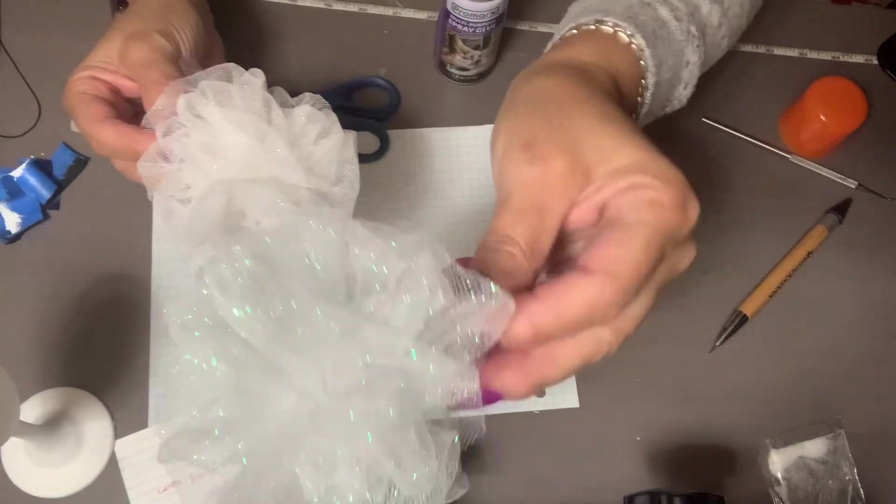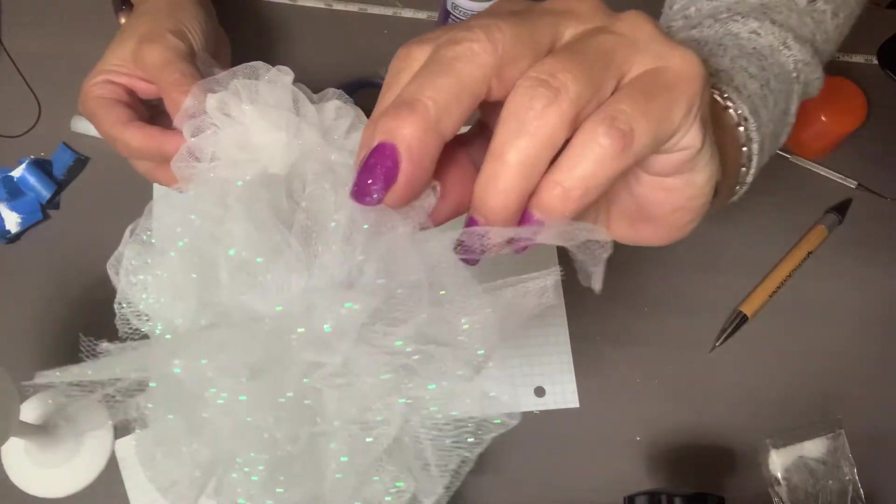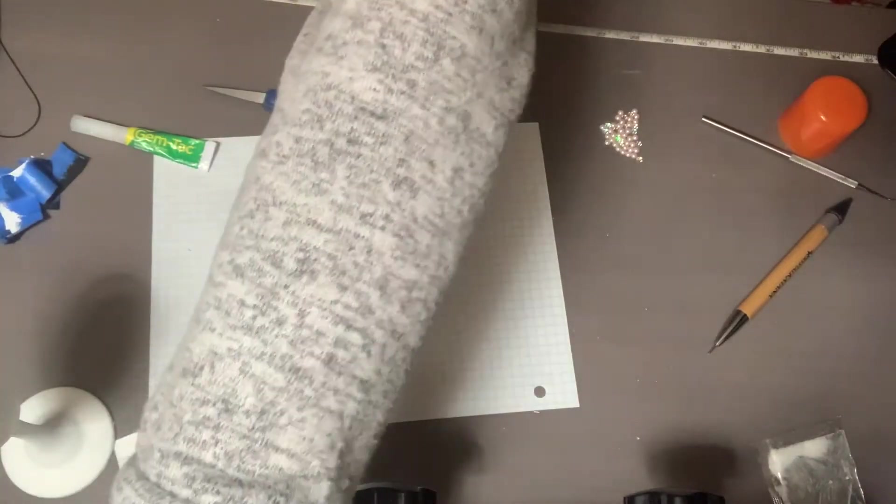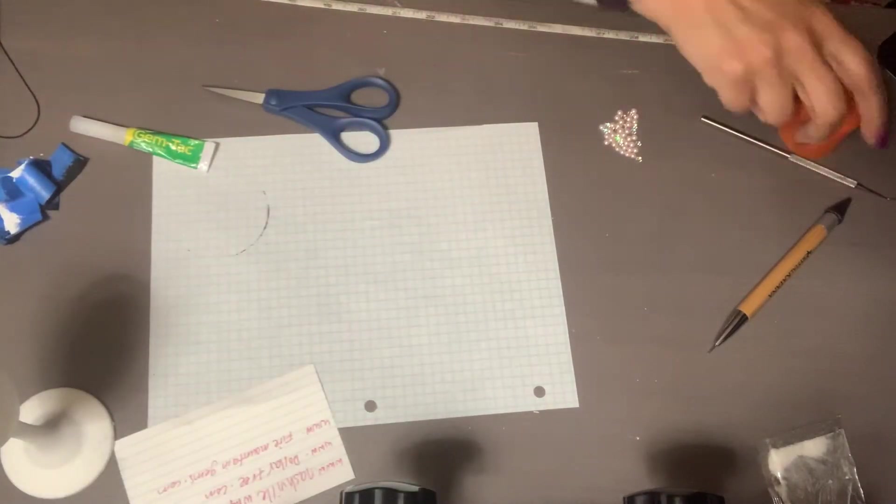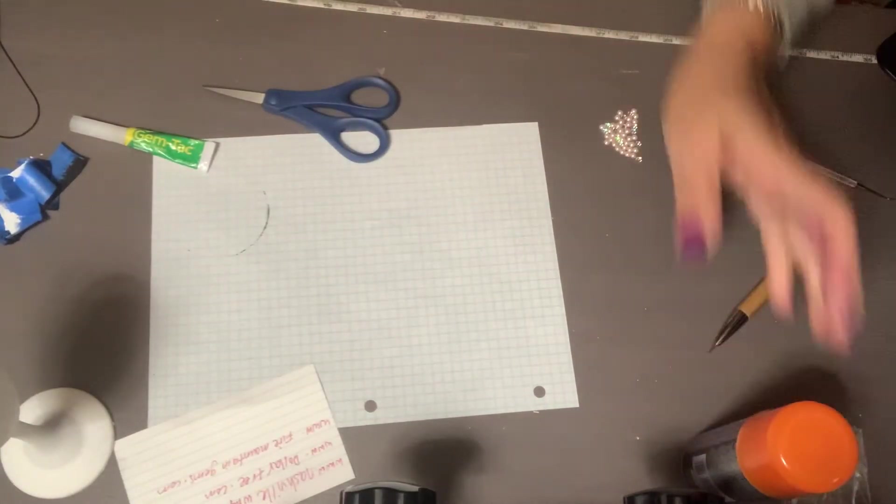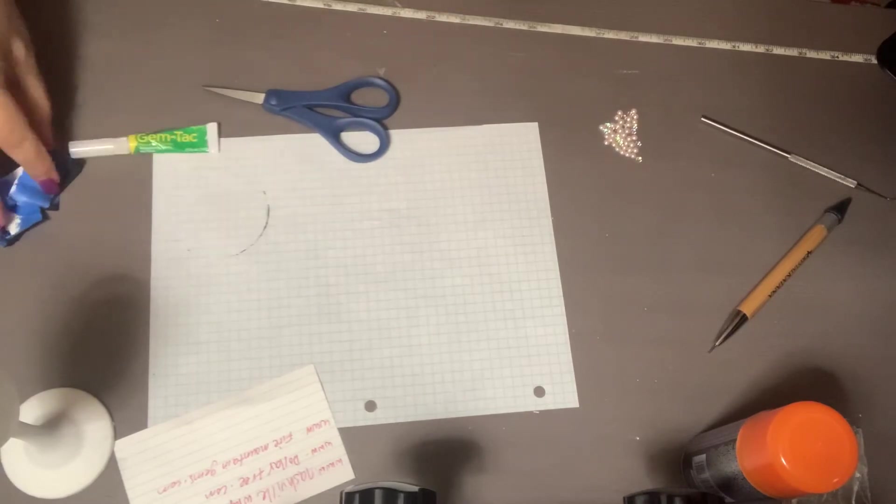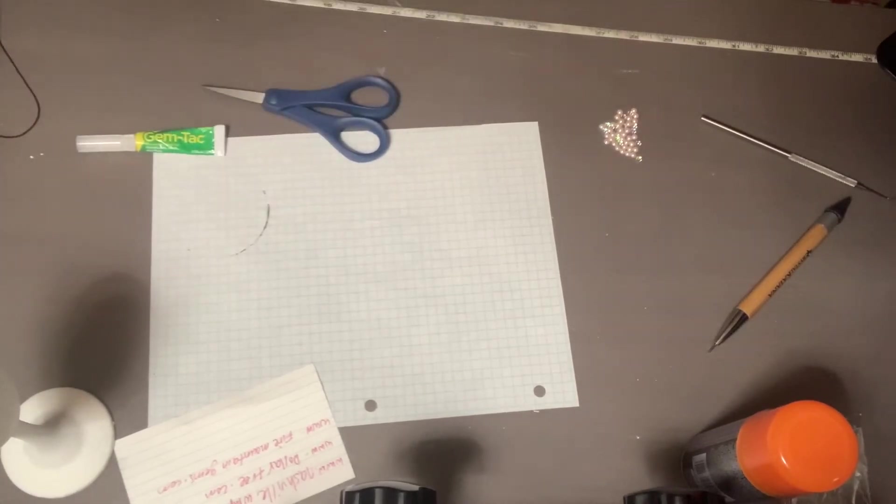And I'm going to get my glitter also from the Dollar Tree, and I'm going to put it over it. See how shiny it looks? So I'm going to put it aside. This is another one I did also. So I'm going to put them both aside so they can dry, and now we're going to get ready to put our beads.